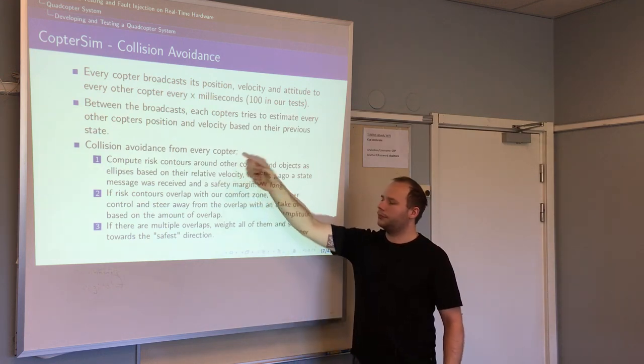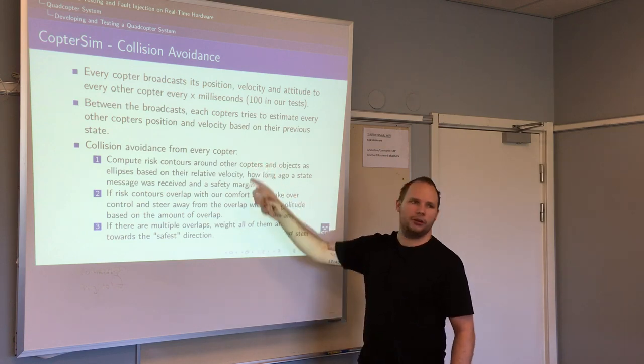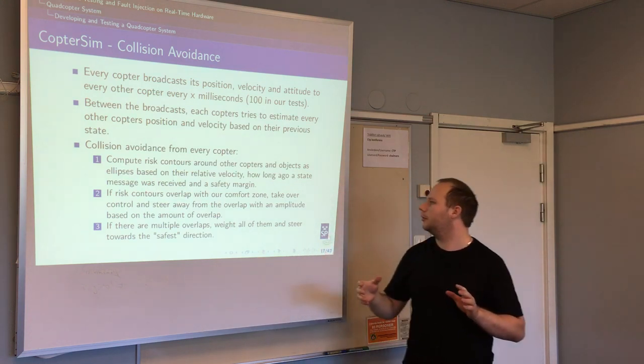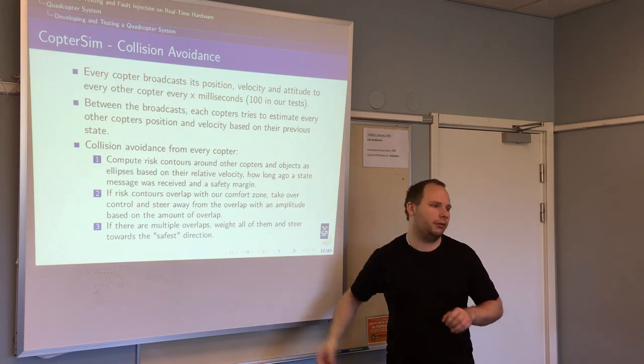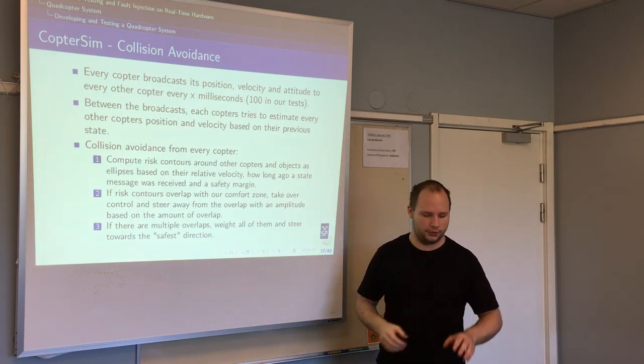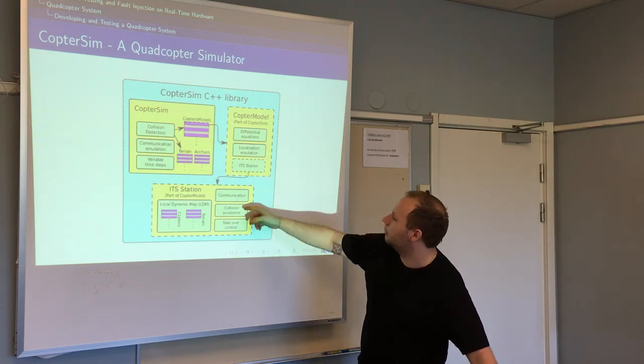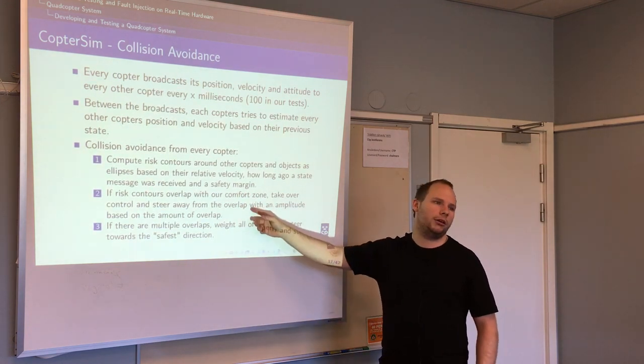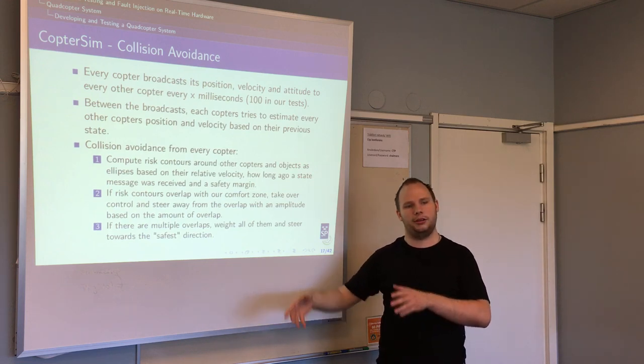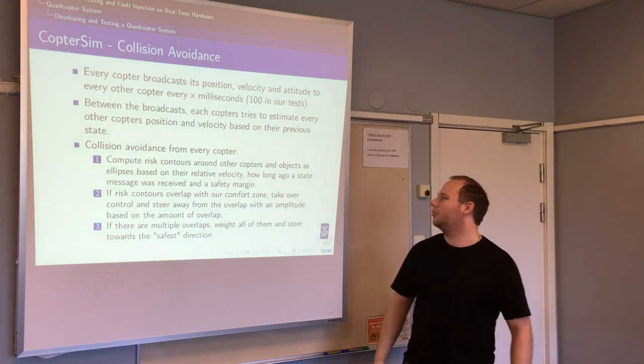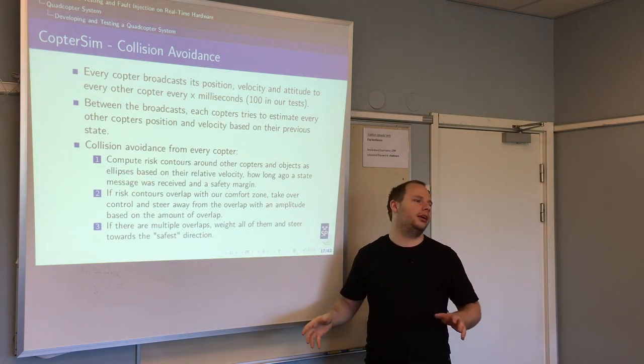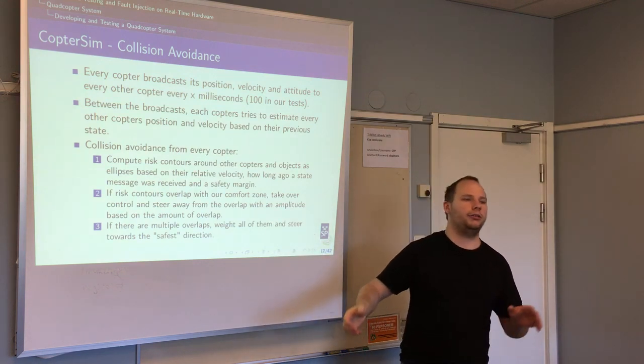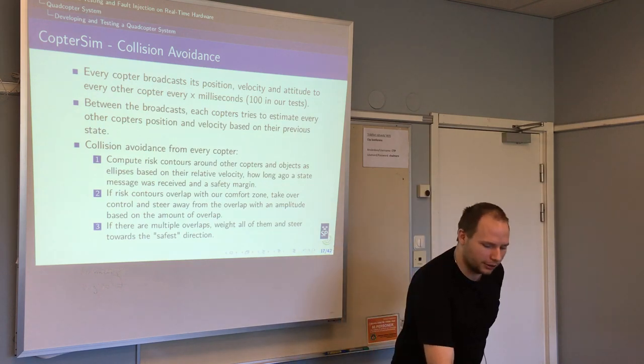Then we have collision avoidance. It works by computing risk contours around all other quadcopters that are seen in its local dynamic map. These are ellipses essentially. If the risk contours overlap with their own comfort zone of the quadcopter - so now we're talking about what every quadcopter does from its perspective - if it overlaps with risk contours of some other quadcopter or several of them, it will try to steer away. It will take over control from whatever is controlling it, start to steer away, and give back control. It should essentially be able to give them random steering commands and they should not collide if everything goes well. If it overlaps with multiple quadcopters, it will compute a vector that points away from all of them to steer away from the collision.